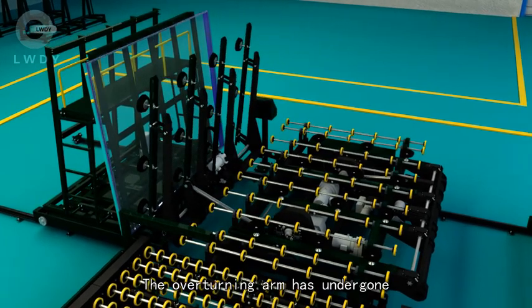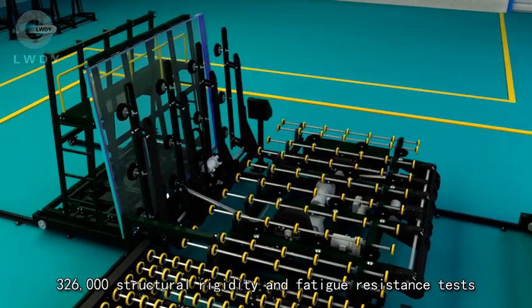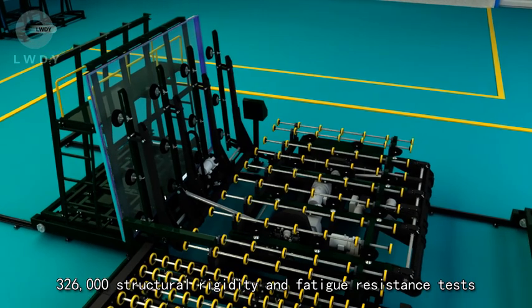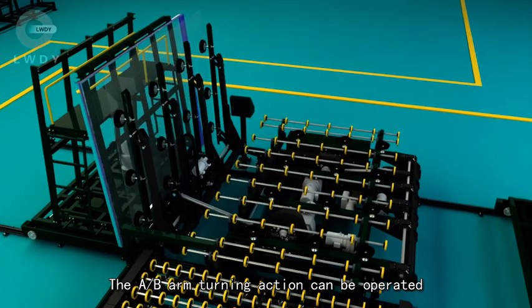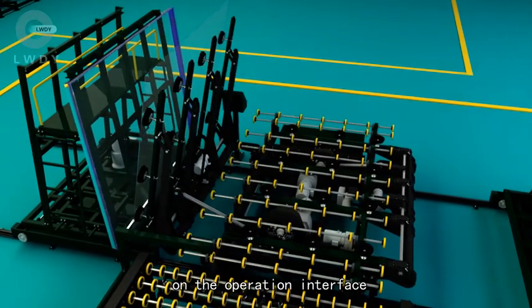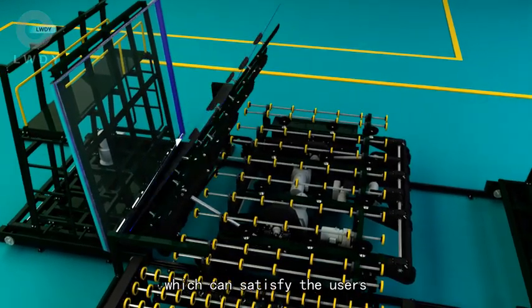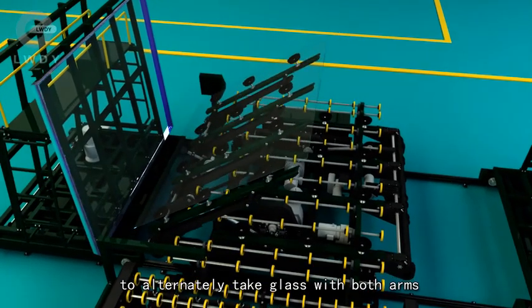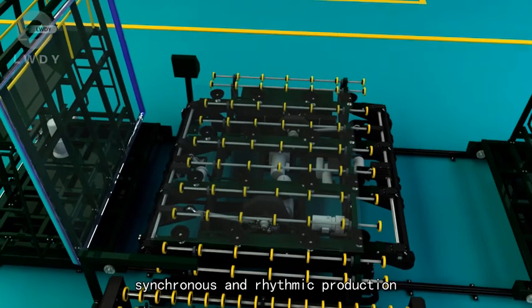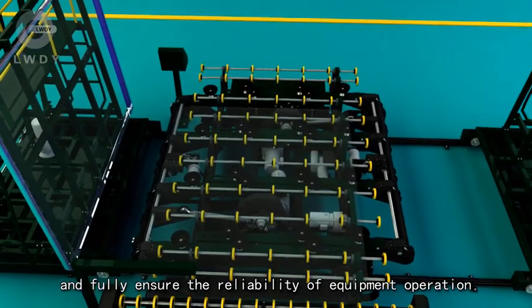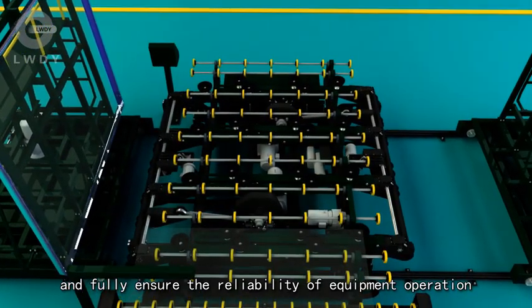The overturning arm has undergone 326,000 structural rigidity and fatigue resistance tests. The AB arm turning action can be operated on the operation interface, which can satisfy users to alternately take glass with both arms, realize balanced, synchronous and rhythmic production, and fully ensure the reliability of equipment operation.